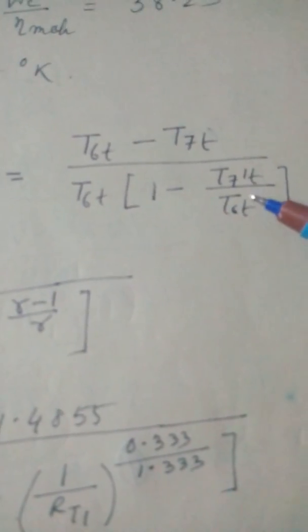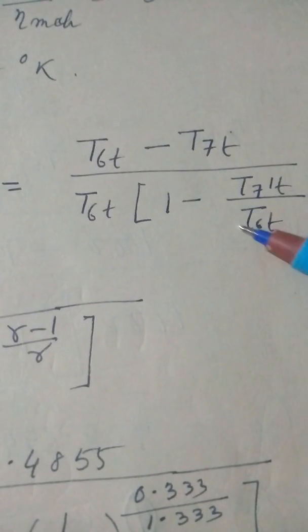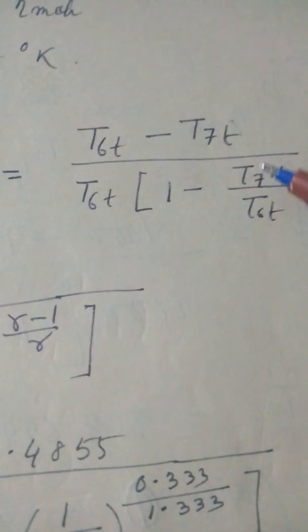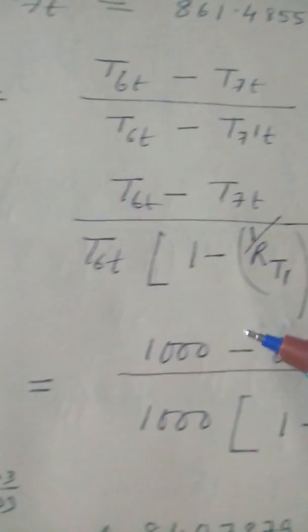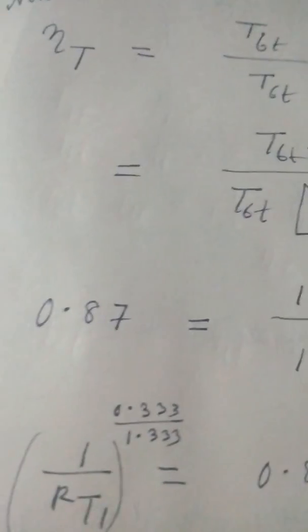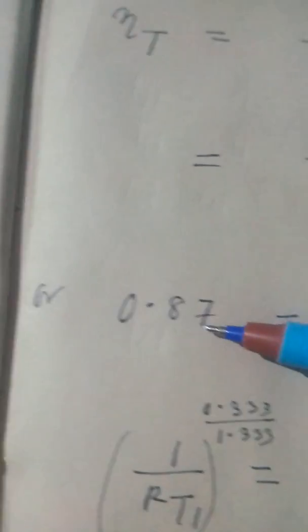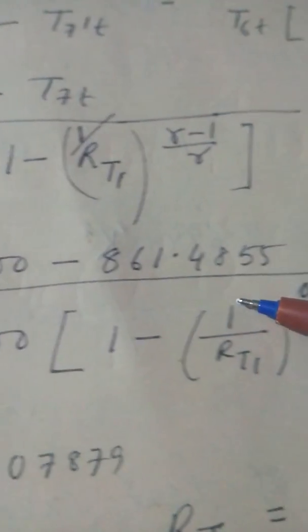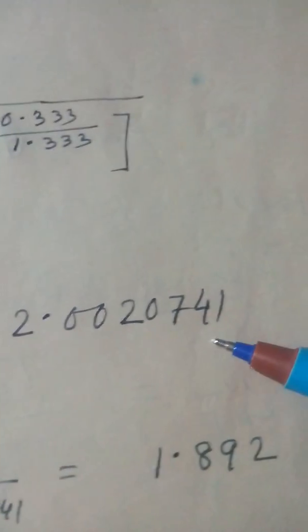So one by RT1 into gamma minus one by gamma. Because you see this, this actually T6T by T7, just T, this is equal to RT. This by this is equal to RT, so this by this will be 1 by RT1, gamma minus 1 by gamma. Now RT1 is given, so this is given 87% efficiency of the turbine. So this we are substituting to find out RT1. So RT1 can be found out directly, this one.